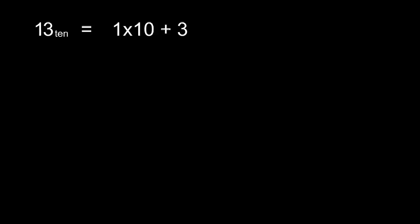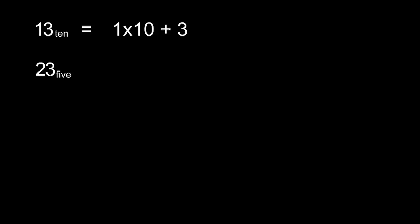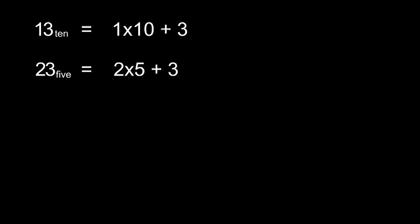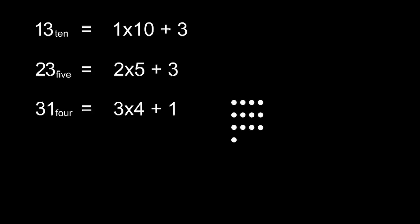A quick summary so far then. Thirteen base ten is one group of ten and three left over. Twenty-three base five is two groups of five and three left over. And thirty-one base four is three groups of four and one left over.